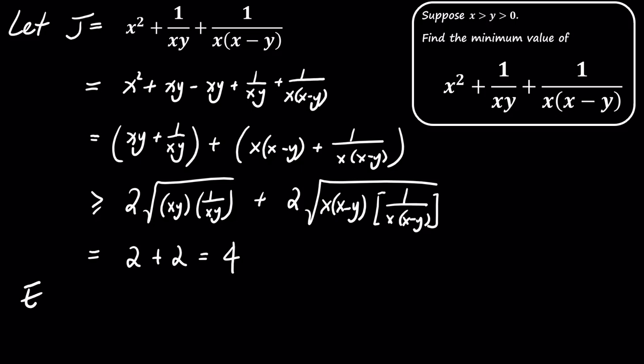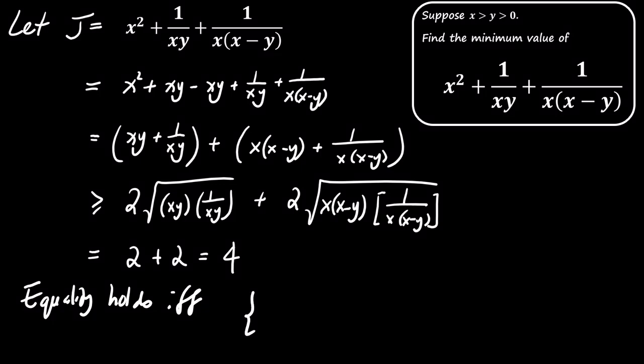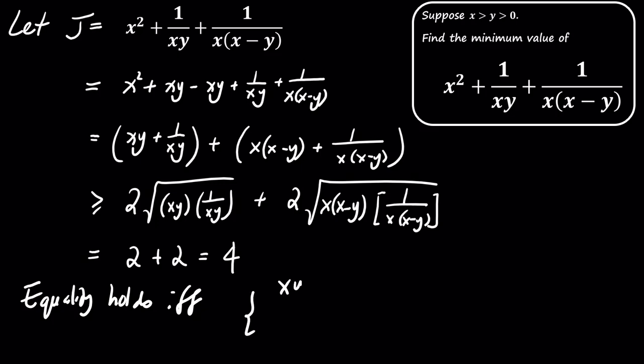But when does equality hold? Equality holds in the AM-GM inequality when the two terms being compared are equal. So for equality to hold in our case, we need the conditions: xy equals 1 and x times the quantity x minus y also equals 1.